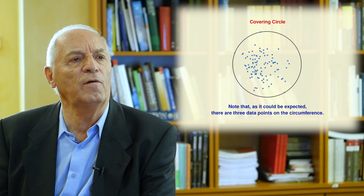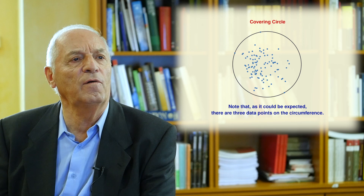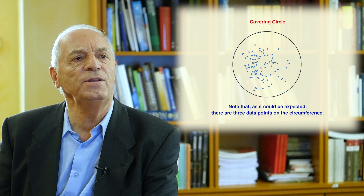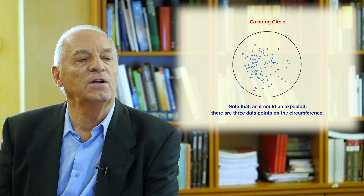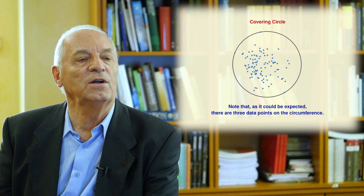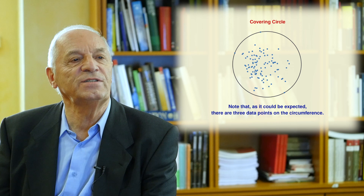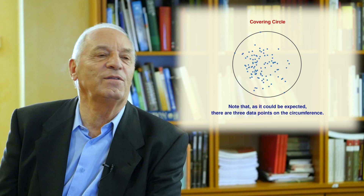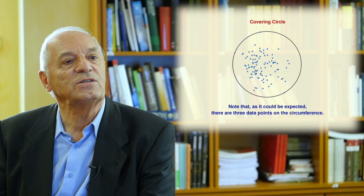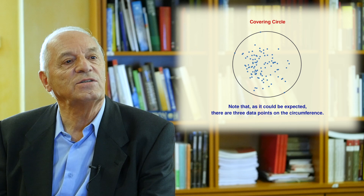The next example: you are supposed to simulate random points, and once you have simulated these random points, you need to find the minimum size circle that contains all the points inside or at the boundary. It is interesting to see that the solution will contain three points at the circumference and the rest inside, unless there is a degeneration — and this is important because three points define a circle.